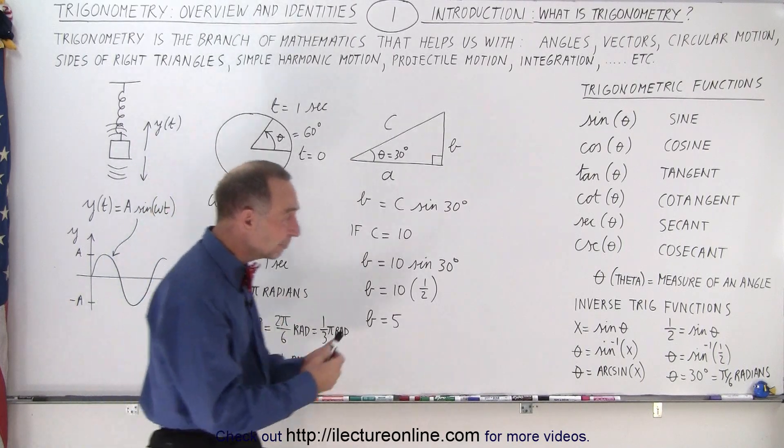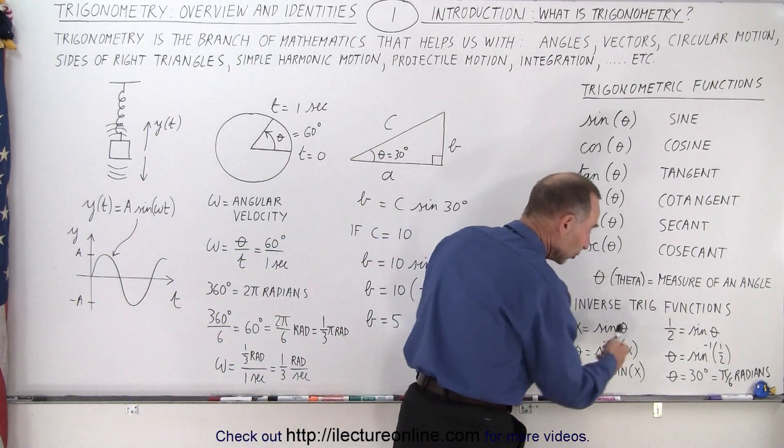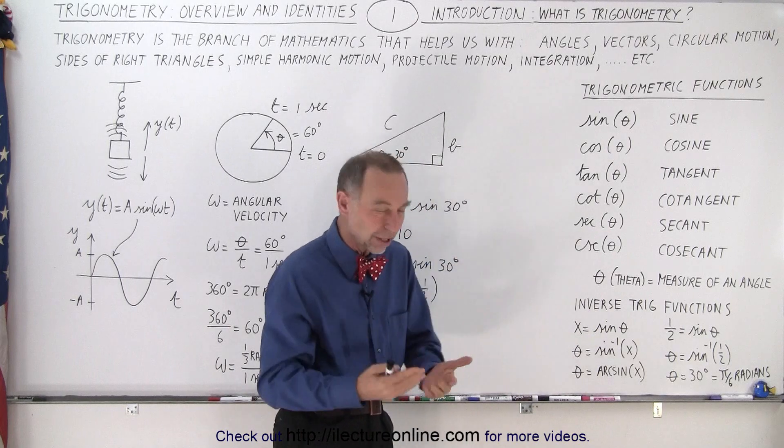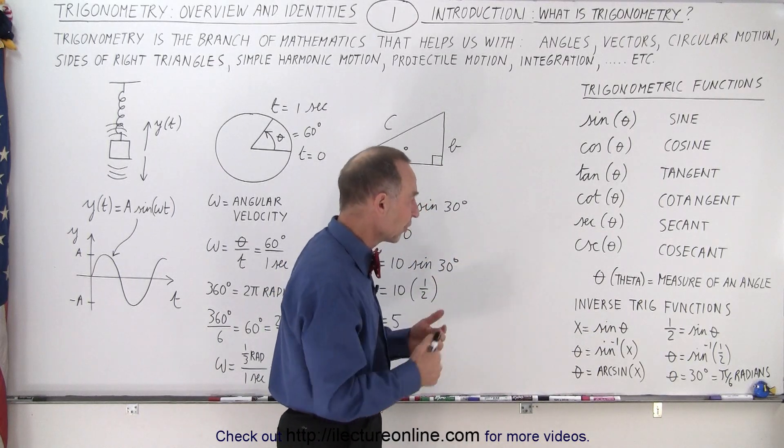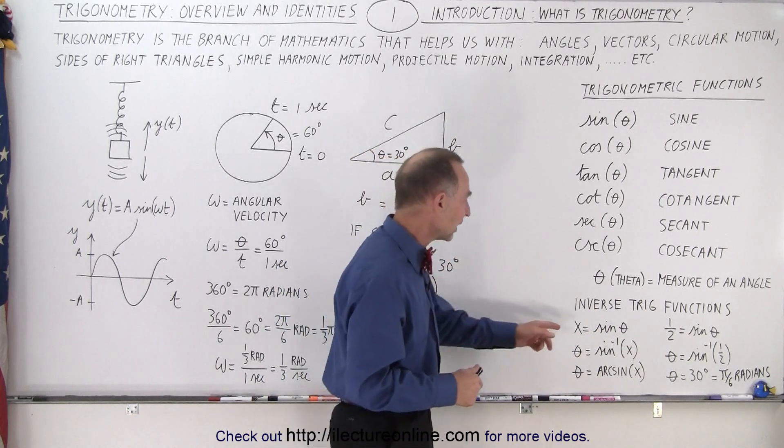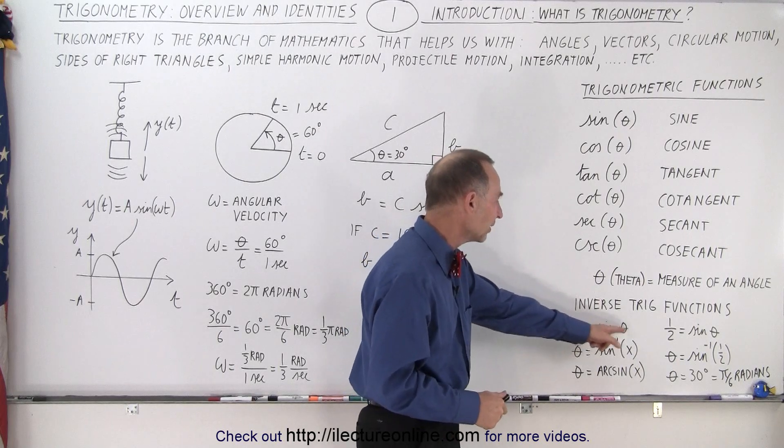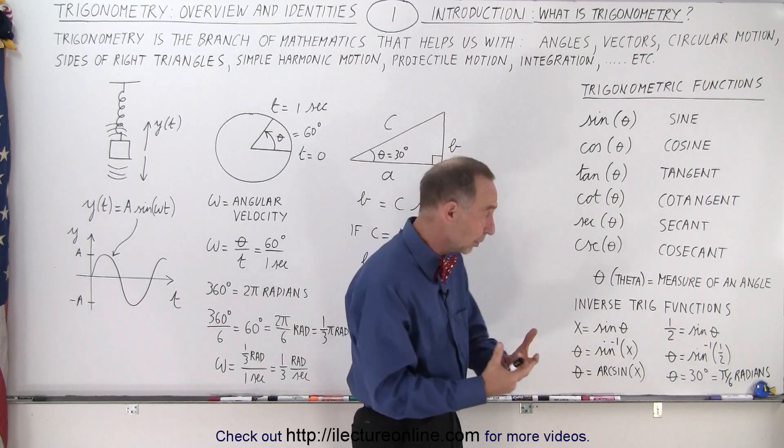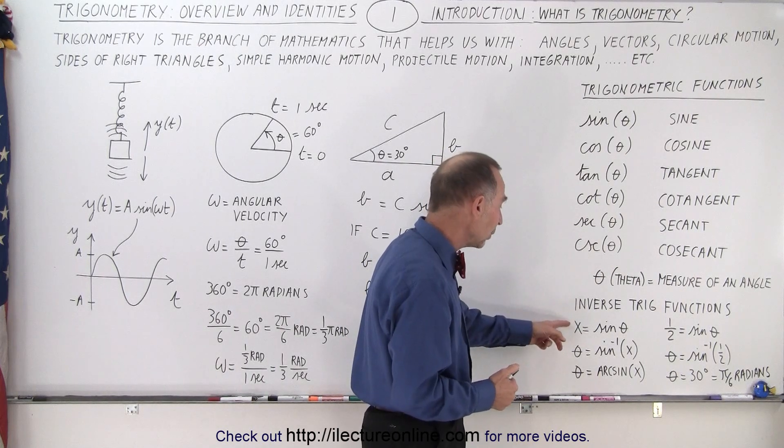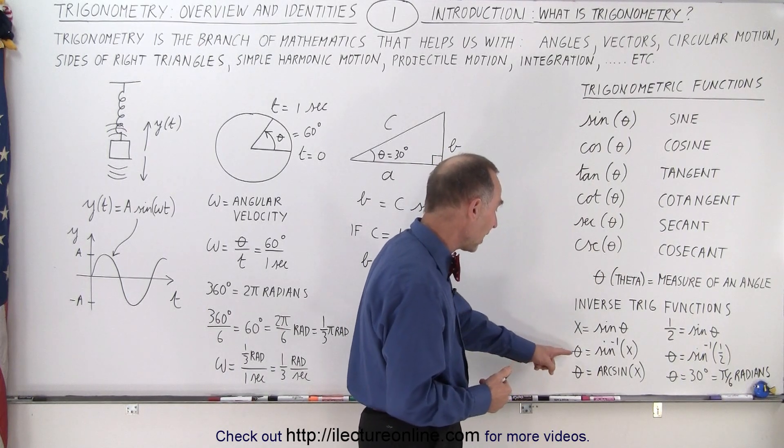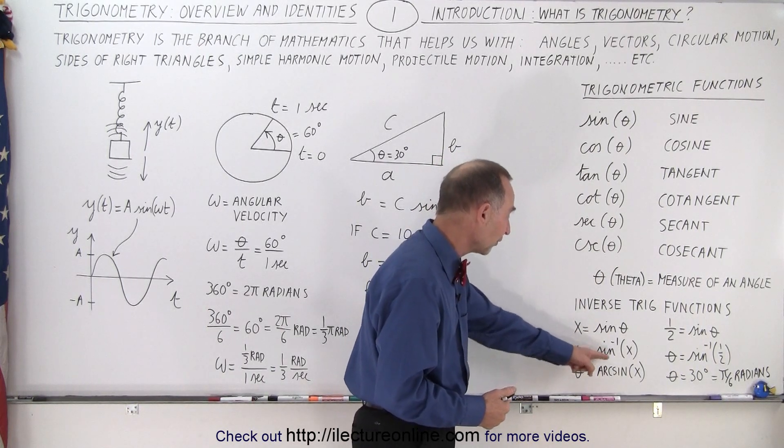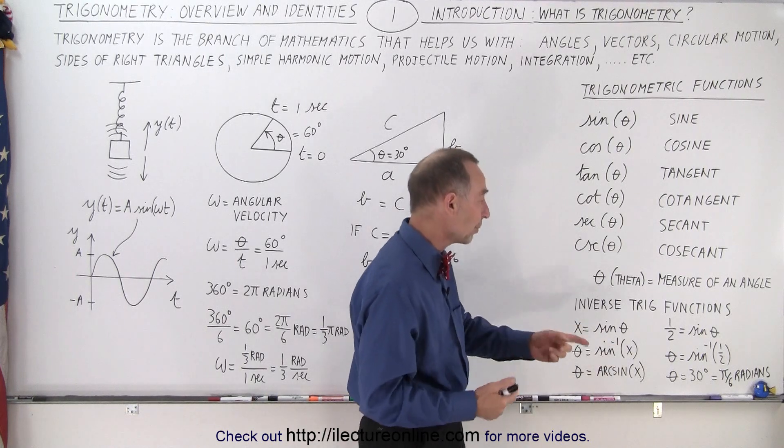Then we have what we call the inverse trig functions. We use the word trig to say trigonometry in short. For example, if x equals the sine of theta, theta is the symbol used for an angle, a measure of an angle, then we can find the inverse function by saying theta equals the inverse function of the sine of x.